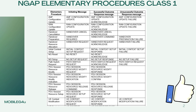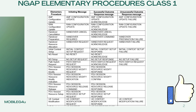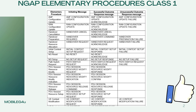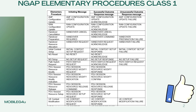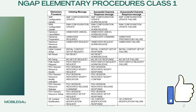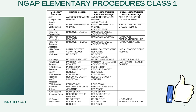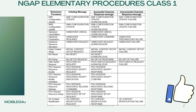In NGAP we have two kinds of elementary procedures: Class 1 and Class 2. In Class 1 procedures, as you can see, there are many elementary procedures. With every procedure, there is one message that triggers it. If the outcome is successful, a response will come; if the outcome is unsuccessful, a failure message will come. So each procedure has an initiating message, a successful outcome, and an unsuccessful outcome.